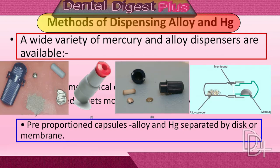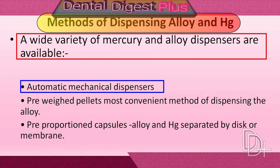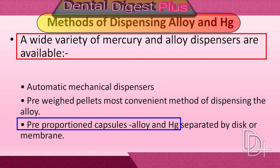Disposable capsules containing pre-proportioned amounts of mercury and alloy are now widely used. They contain alloy either in pellet form or as a pre-weighed portion of powder with the appropriate quantity of mercury. Some alloys are now available in self-activating capsules, which automatically release mercury into the alloy chamber during the first few oscillations of the amalgamator. Although pre-proportioned material is more expensive, it is convenient and eliminates the chance of mercury spills during proportioning.